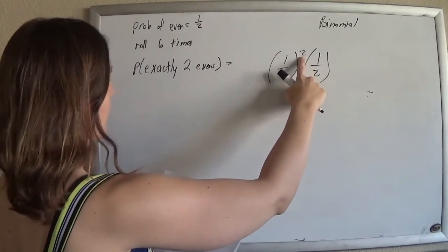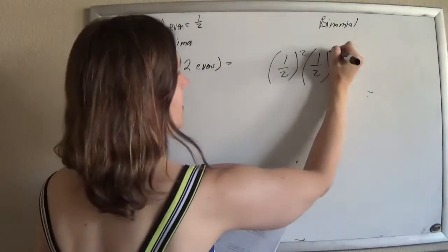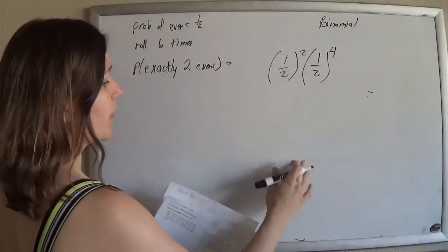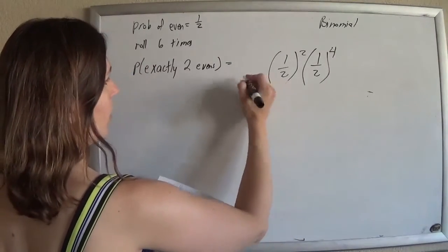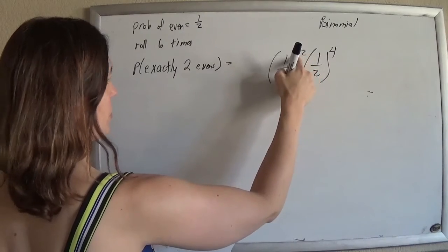So, if I want two evens and I'm rolling six times, that means I want four not evens, but I don't care about the order, so I want to know how many ways are there to choose those two.